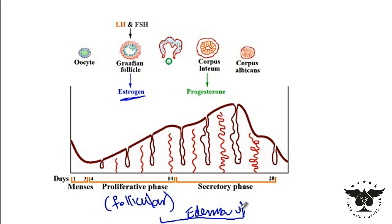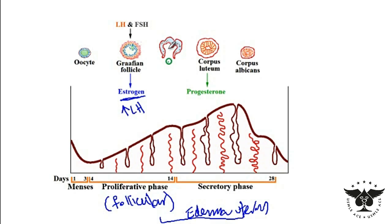When estrogen levels rise and pass a certain threshold, it causes increased luteinizing hormone. What luteinizing hormone does is that it causes rupture of the follicle, and that's when the oocyte will be released. What remains of the follicle is referred to as the corpus luteum.